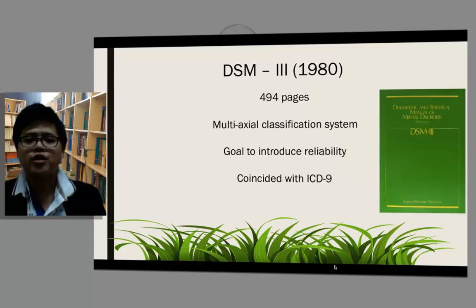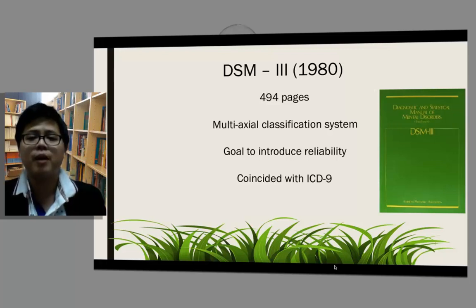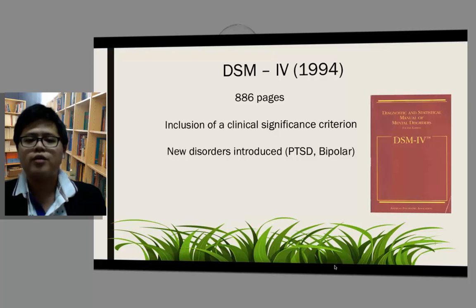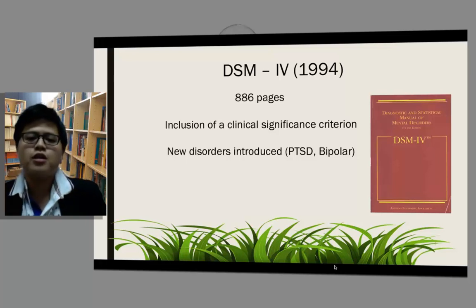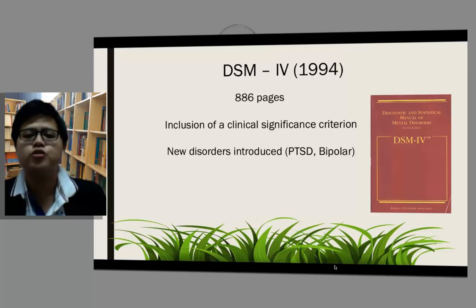DSM-3 has 494 pages and was published in 1980. It first introduced the concept of a multi-axial classification system. Its goal was to introduce reliability. Its publication coincided with the publication of ICD-9. DSM-4 was published in 1994 and the number of pages increased to 886 pages. It saw the first inclusion of the clinical significance criteria. New disorders were introduced, like PTSD and bipolar disorders.